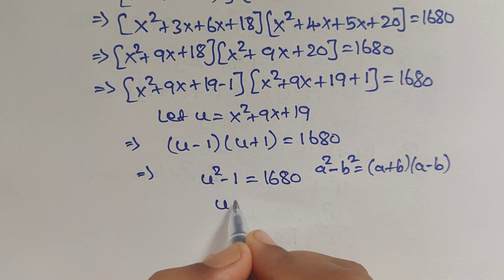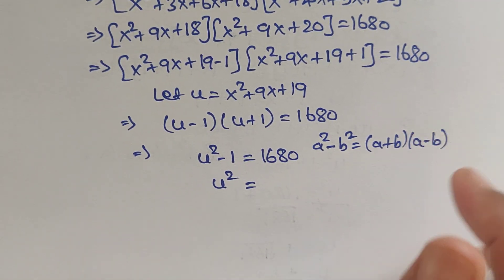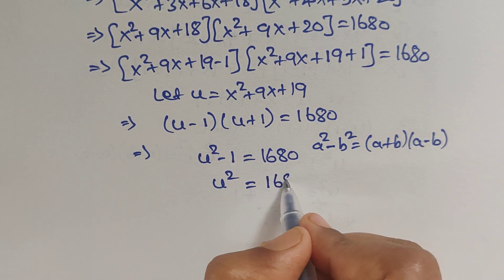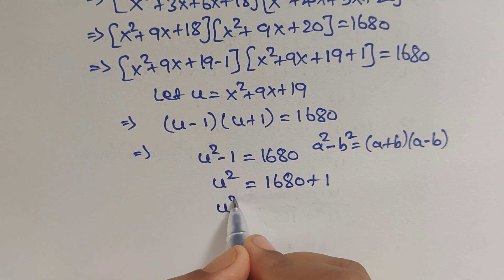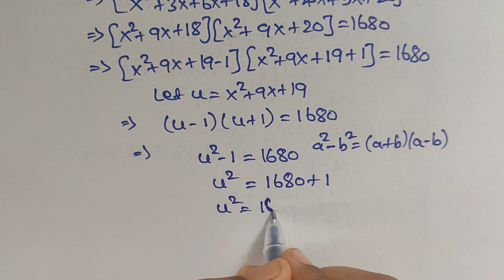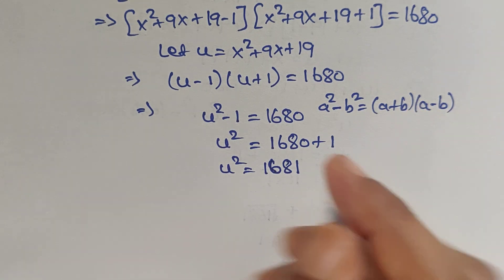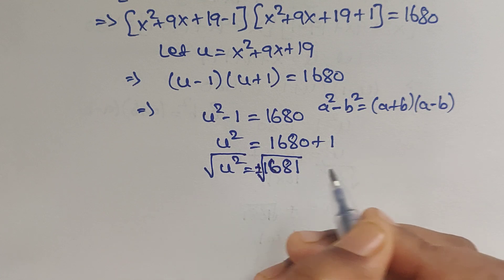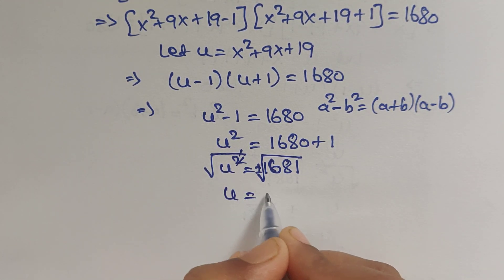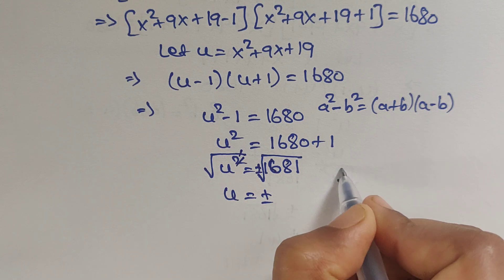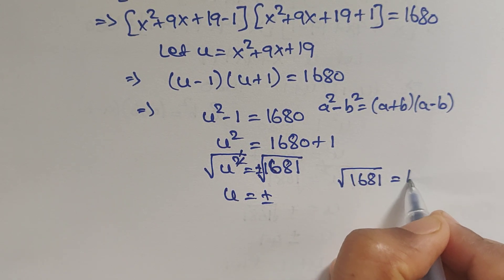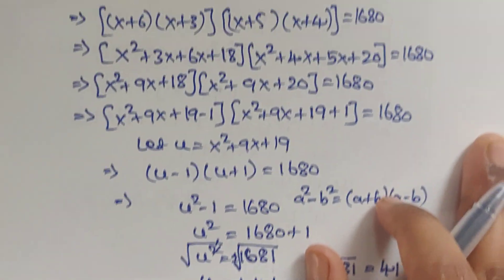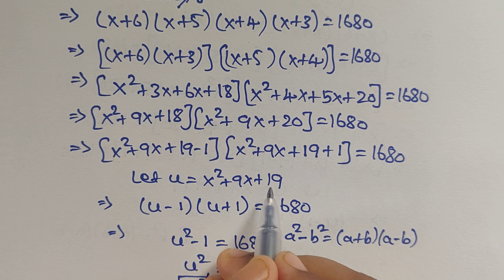Moving the 1 to the right side gives u² = 1681. Taking the square root of both sides, u = ±41, since the square root of 1681 is 41. Recalling that u = x²+9x+19, we now consider two cases.